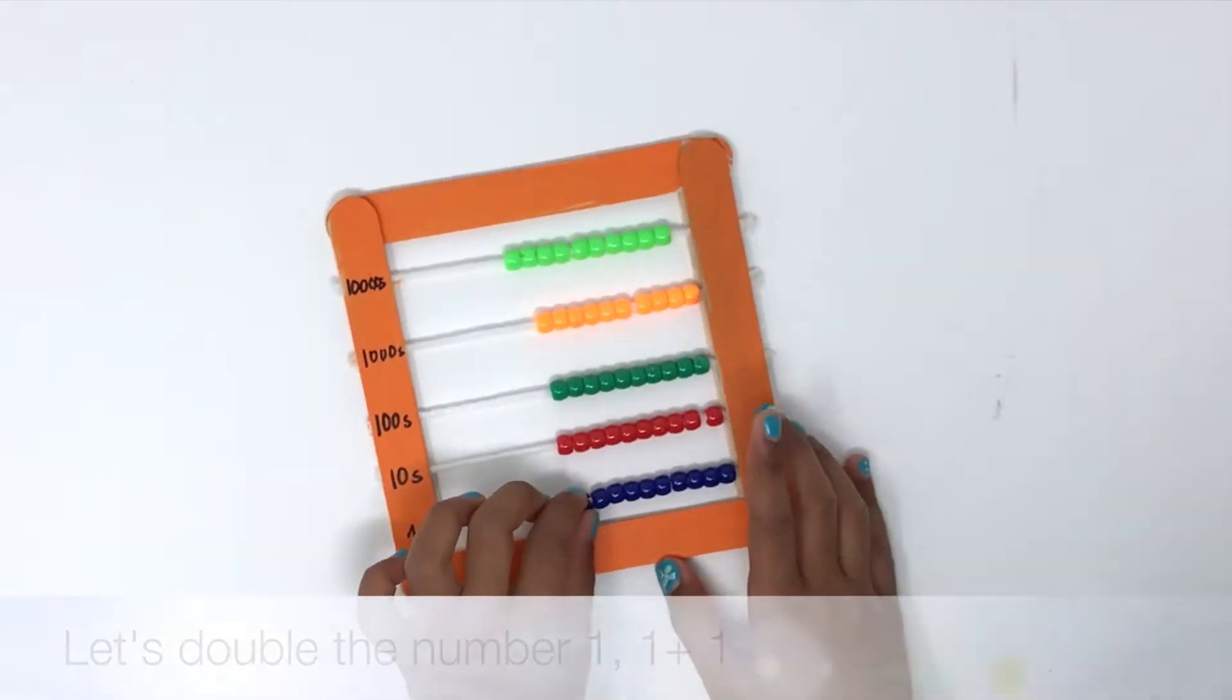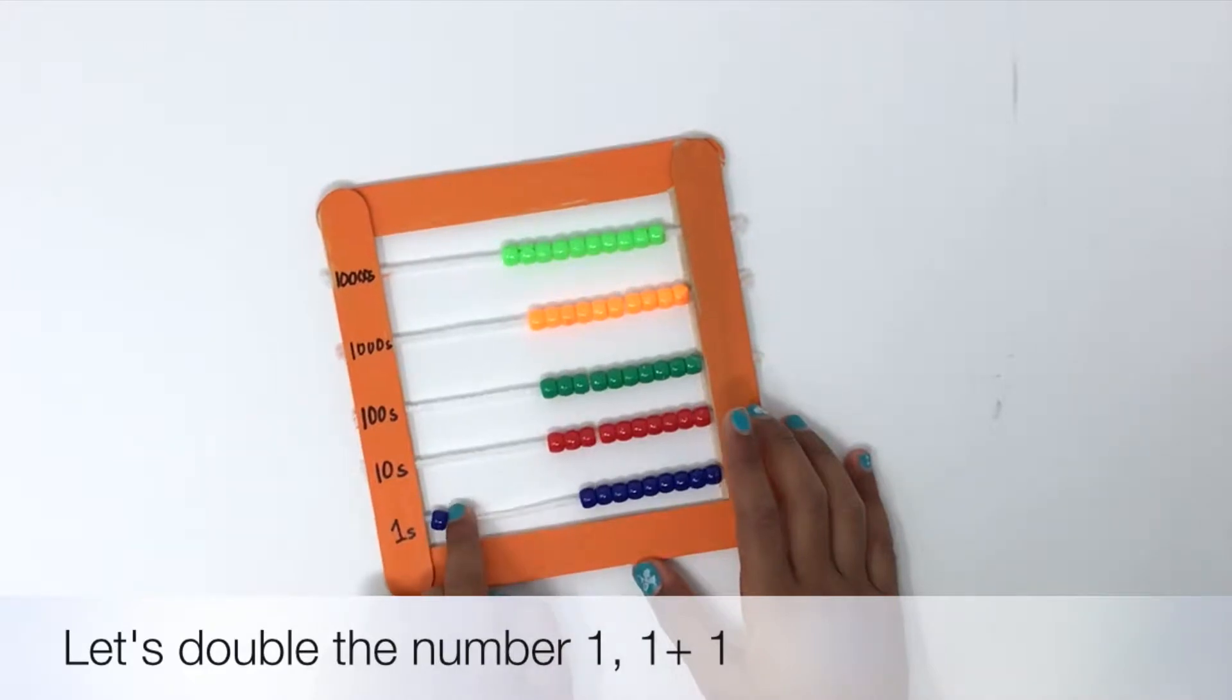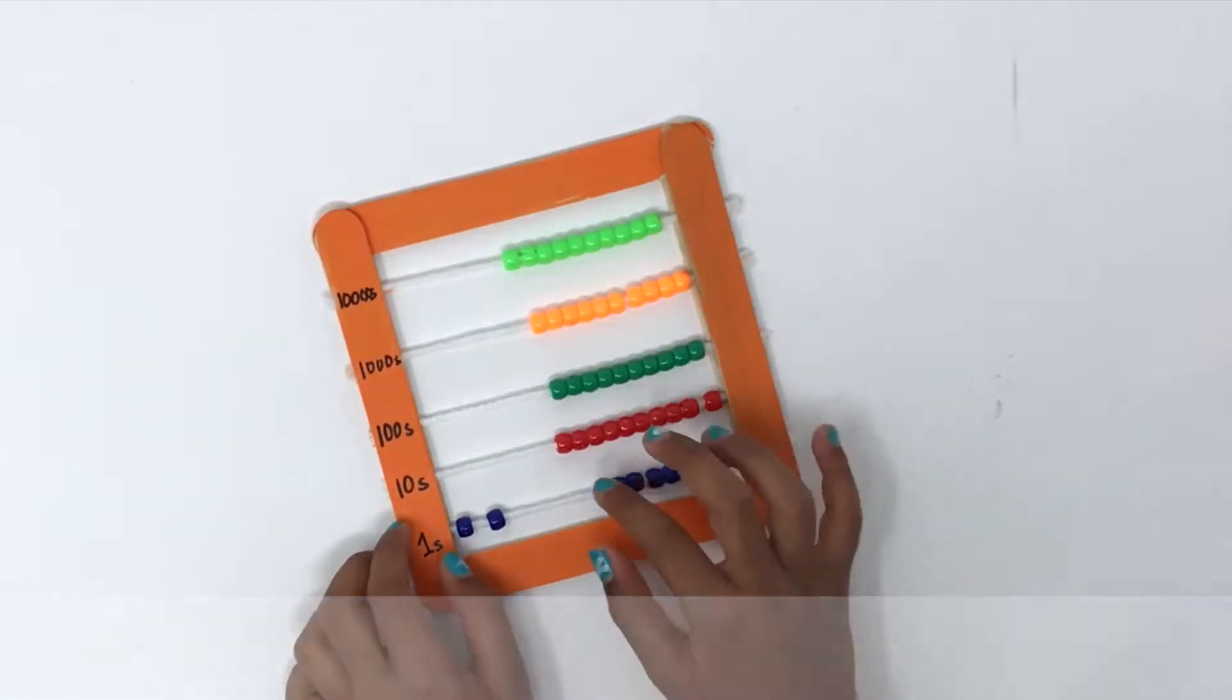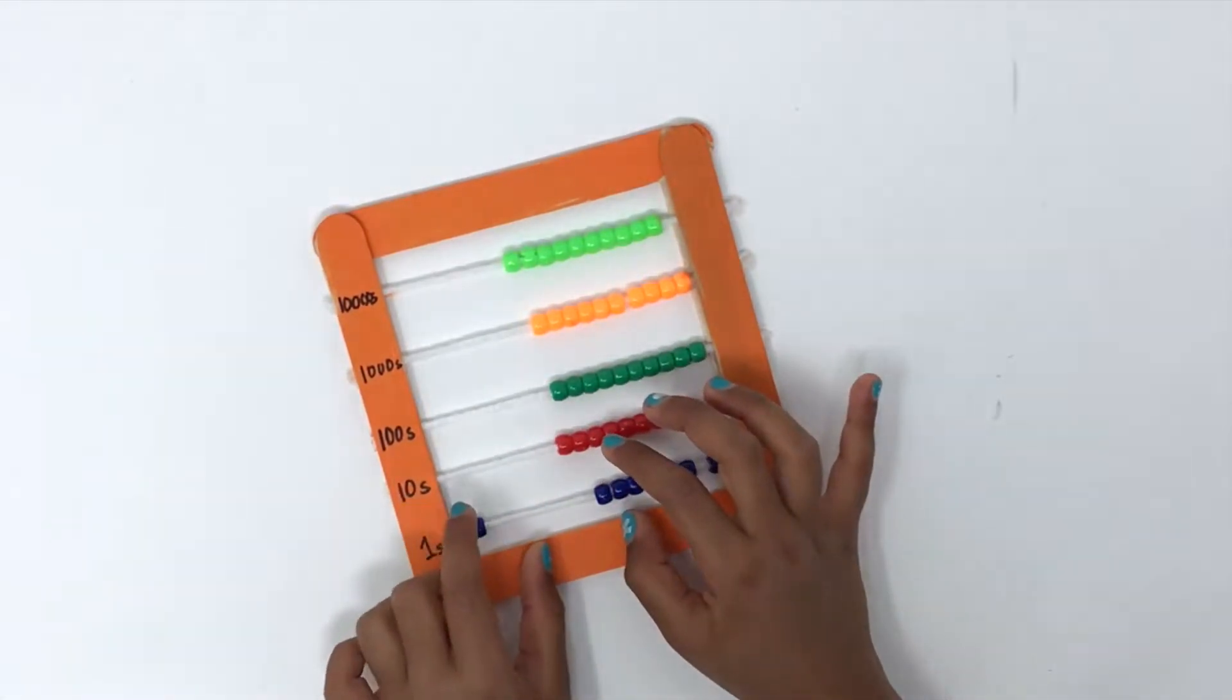Let's start by doubling the number 1. So you push on the bottom most row 1 to the left, then another one and push them together. What number did you get? Two.